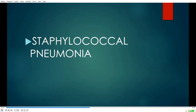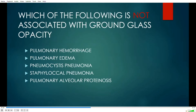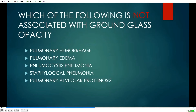The answer is staphylococcal pneumonia — all the others are characterized by ground glass opacification. Pulmonary hemorrhage: if you see ground glass opacity and the patient has hemoptysis, it's probably hemorrhage. Pulmonary edema, of course, is the most common cause. Pneumocystis pneumonia is a classic example. And you can have other diffuse diseases such as pulmonary alveolar proteinosis. So those are some of the classic examples of ground glass opacity.